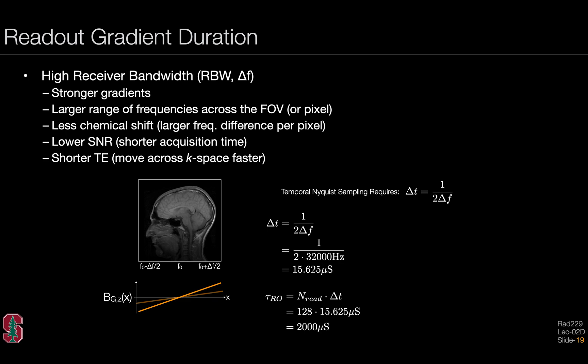In addition to calculating the readout amplitude, we would want to calculate the readout gradient duration. We know that the temporal Nyquist sampling requires that we have a delta T equal to one over twice the delta frequency. We can rearrange this expression. We have the receiver bandwidth shown here on the bottom and we can get the delta sampling step time, which is about 15 microseconds in this case. If we want to sample in 15 microsecond steps for every readout point, we might be sampling 128 readout points for 128 pixel image. Multiplying that by the delta time step for each measured point gives us a readout duration of about 2000 microseconds.